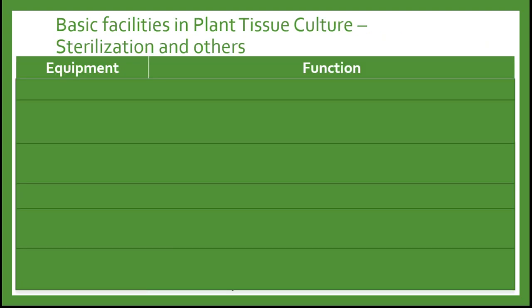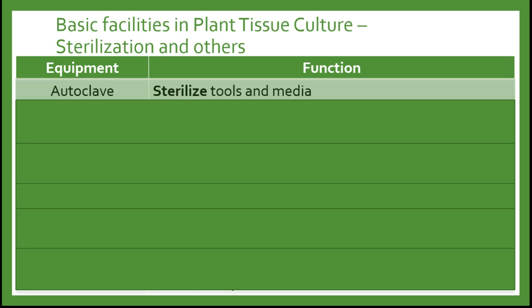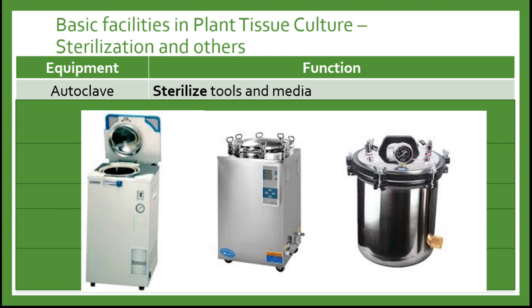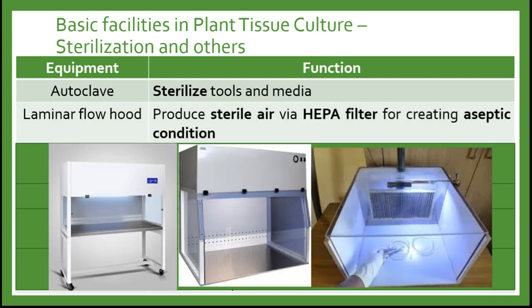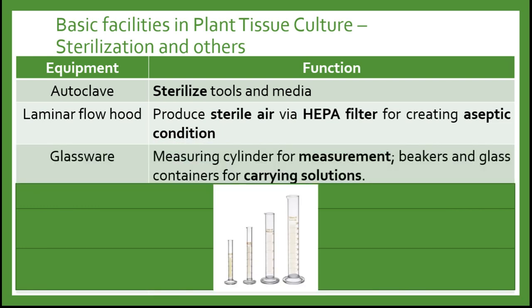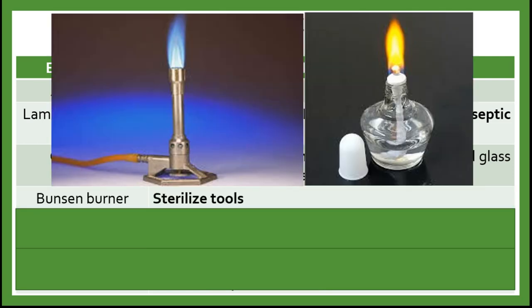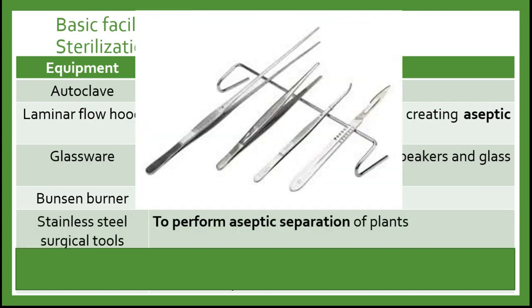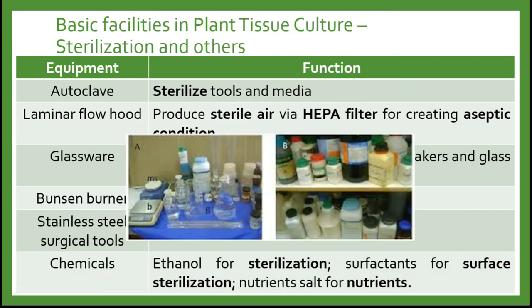What are the basic needs for sterilization and others? First, when talking about sterilization, we are referring to the autoclave, which functions to sterilize the tools and media. Laminar flow hood is used to produce sterile air via HEPA filter for creating aseptic conditions. We need some glasswares like measuring cylinders for measurement, beakers and other glass containers for carrying solutions and media. Bunsen burner is used to sterilize the tools. Standard steel surgical tools are used to perform aseptic separation of plants. Lastly, the most important is the chemicals. Ethanol is used for sterilization, surfactants are used for surface sterilization, and nutrient salts are used for nutrients in the media.